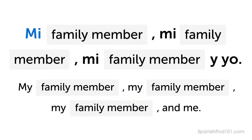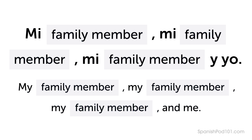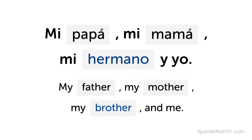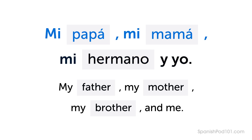The pattern is: mi familia member, mi familia member, mi familia member, y yo — my family member, my family member, my family member, and me. To use this pattern, simply replace the family member placeholder with the members of your family. Imagine your family members are your father, mother, brother, and you. Hermano — brother. Say: my father, my mother, my brother, and me. Mi papá, mi mamá, mi hermano, y yo — my father, my mother, my brother, and me.